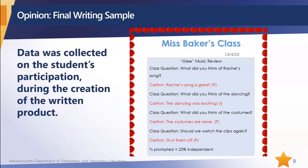So after watching a video clip, phrases to complete a music review are presented two at a time in an auditory scanning format, which the student activated to make a choice. Here's Ms. Baker's class. The class question is, 'What did you think of Rachel's song?' Carlton said the song is great, but there's a P noted. In four of his responses, he was prompted to activate a switch — the auditory scanning format kept going until finally the teacher helped him activate his switch to make a response. So we can see he was only 25% independent. This sample could have also included the auditory scanning choices Carlton didn't make, but that's not necessary for MCAS purposes.